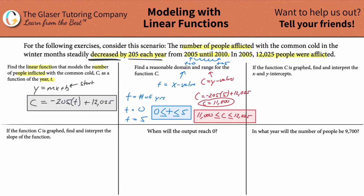So if this function is graphed, interpret the x and y intercepts. You're going to start the graph up at the y-intercept, which is 12,025 — that's always how we start it. Every single year it's going to decrease. Pretend that this is one year: the new value should be 12,025 minus 205, which works out to be 11,820. And this is going to happen for five years.